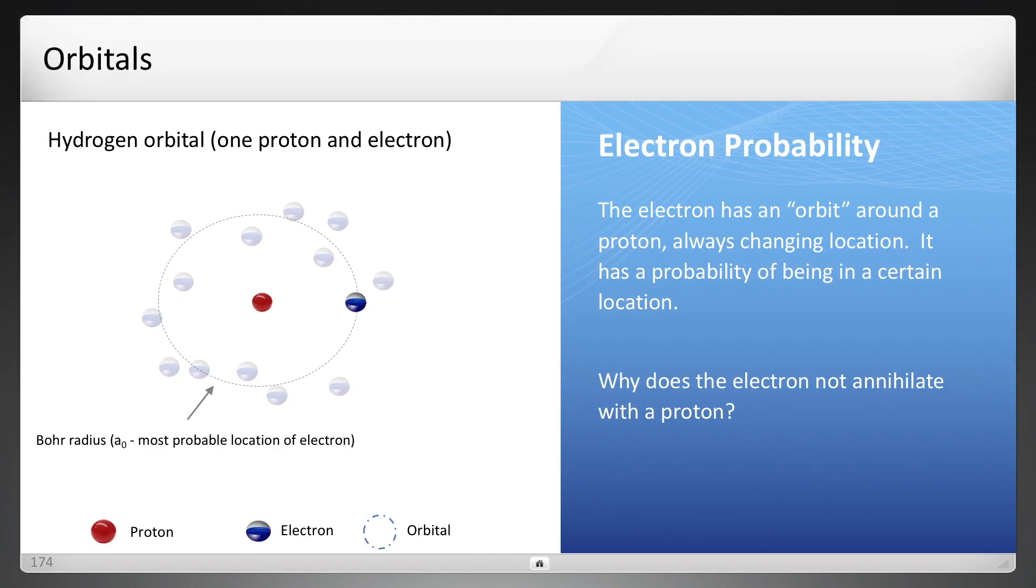We'll start first with hydrogen. The orbital of an electron around a proton, which is hydrogen, a single proton, is known as the Bohr radius, but it's the most probable location of the electron. It could be bouncing around in many different places.